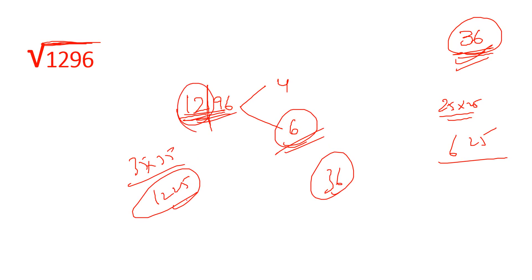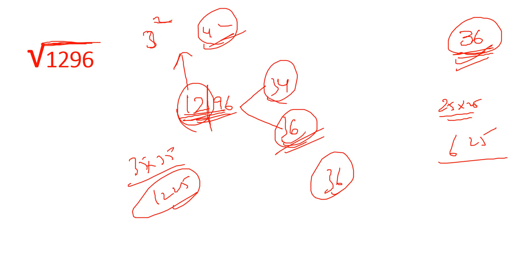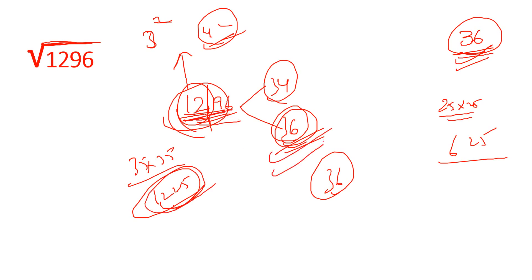Looking at this: 3 squared is 9, 4 squared is 16. So we look at 34×36, which equals 35×35 minus 1, giving 1225 minus 1 = 1224. Confirming the answer: square root of 1296 is 36.